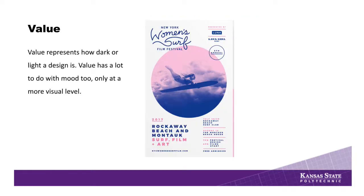The next element is value, which is pretty similar to color. It's just how dark or light a design feels and the mood that is set with the amount of value in a design. The example here is a poster for a women's surf and film festival. It has a very light and airy feel — the value is really light, which goes along with the subject matter of a surf and film festival. It has a little bit of a feminine look, and the type of values they were using really helps the design in all aspects.